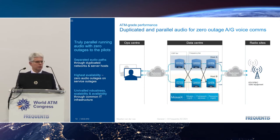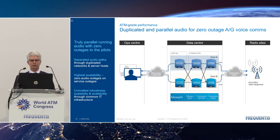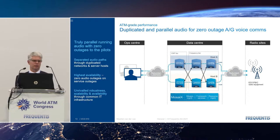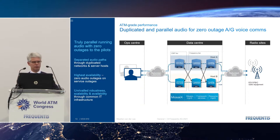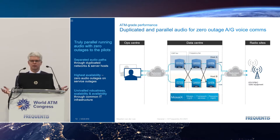On top of that we have a parallel audio layer running on two system halves within the redundant data center, so there is always an audio path available between the CWP and the radio. Using the ED137 linked session algorithm, you can have two sessions up to the radio, so that if there's an outage somewhere in the network or within the data center, there is an audible switchover which makes the system super robust.